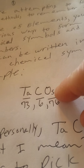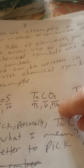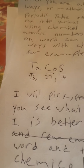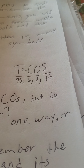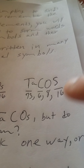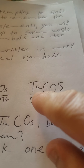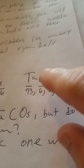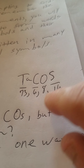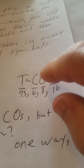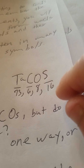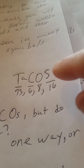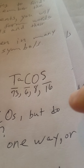And then we have a capital O and S for osmium. Osmium has an atomic number of 76. Here again we have the same word TACOS written in a different way: T-A for tantalum, C for carbon which is 6, a large O for oxygen which is 8, and a large S for sulfur, which is 16.